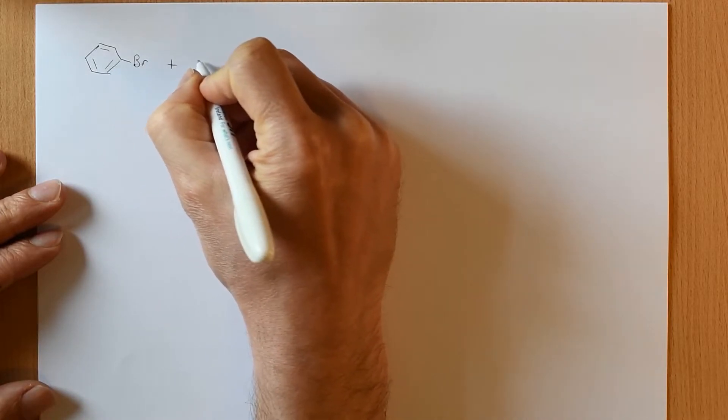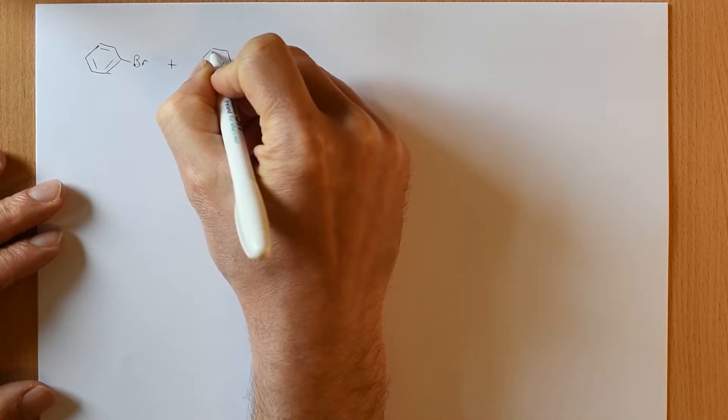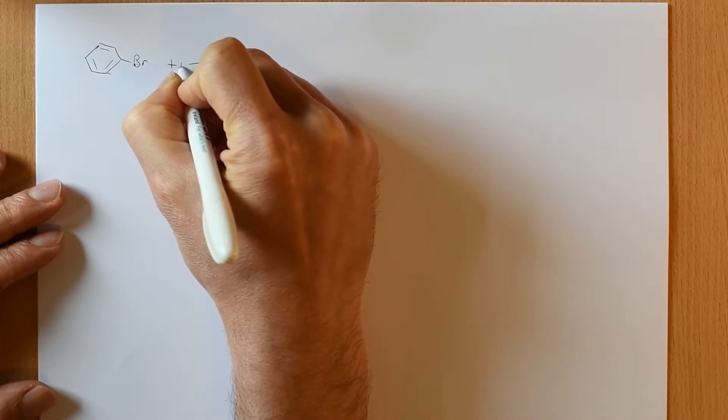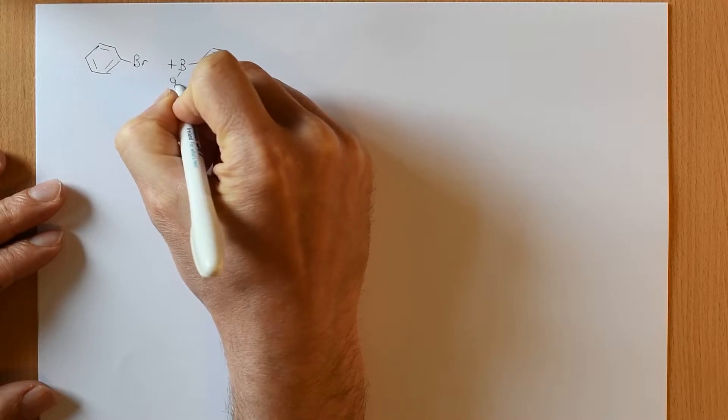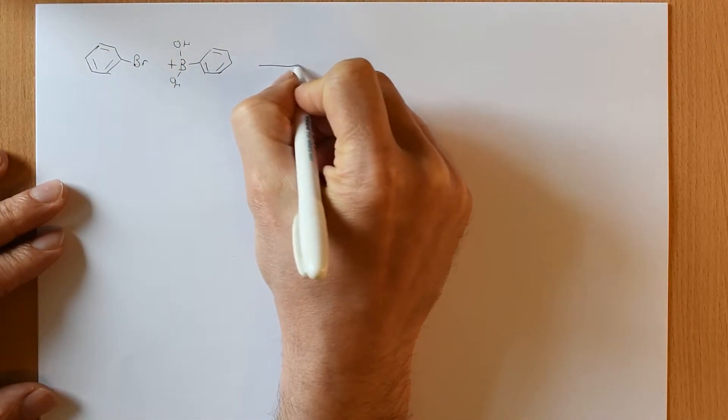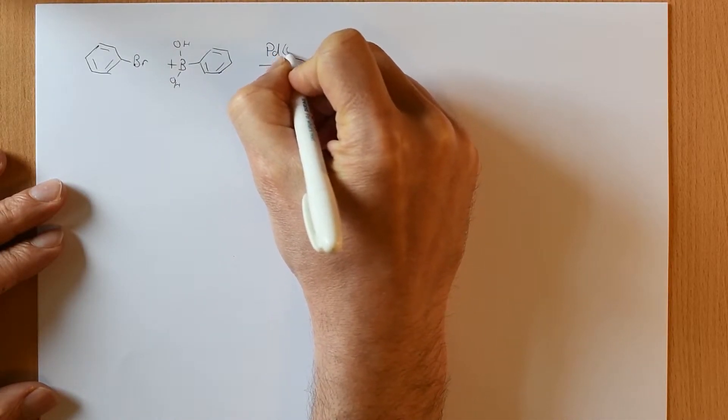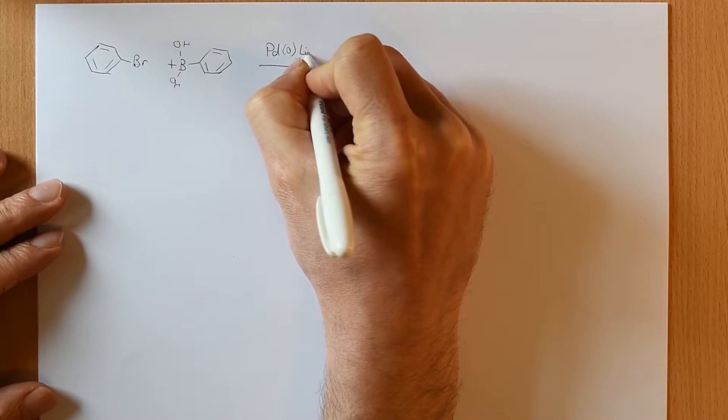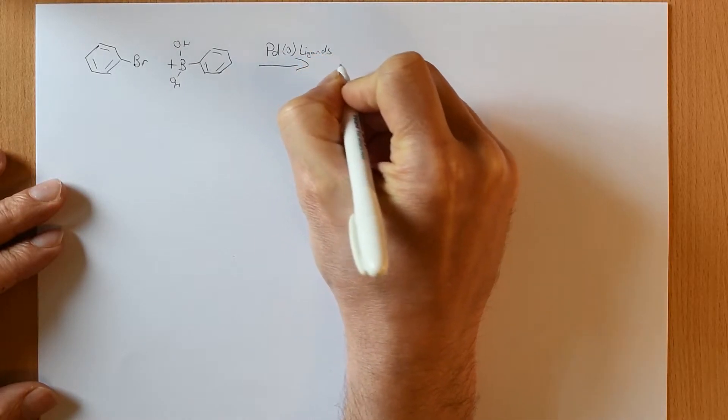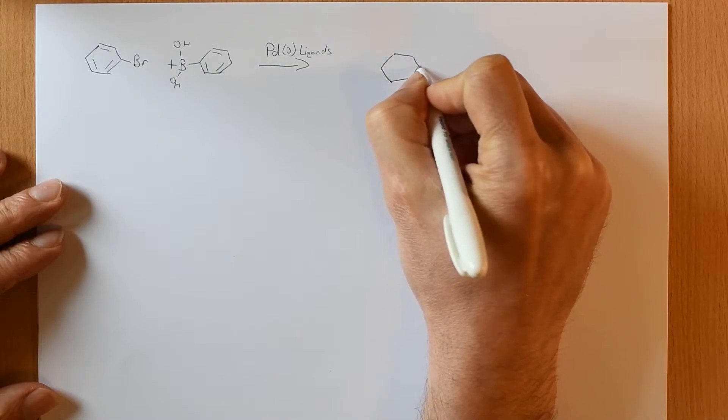We can take that and we can take another aryl boronic acid. So in this case benzene with a boronic acid. And we can transform that using Palladium zero and some ligands, and we can create a coupling of those two aromatic rings.